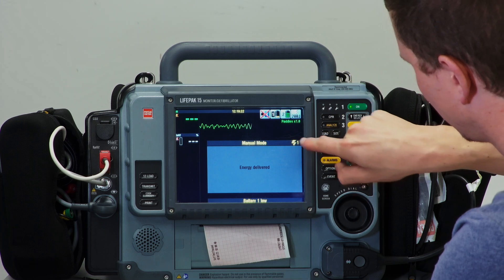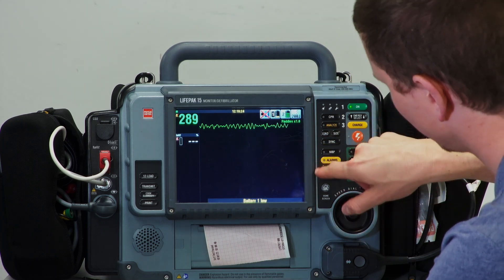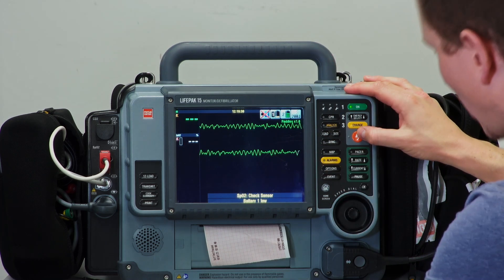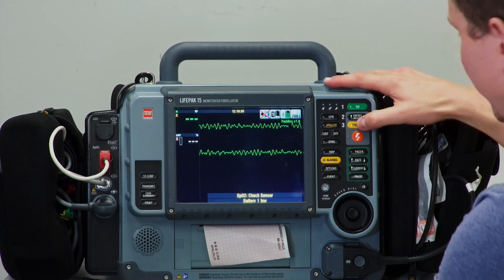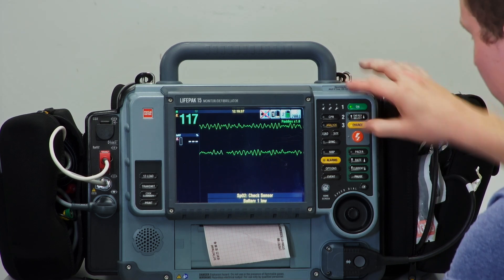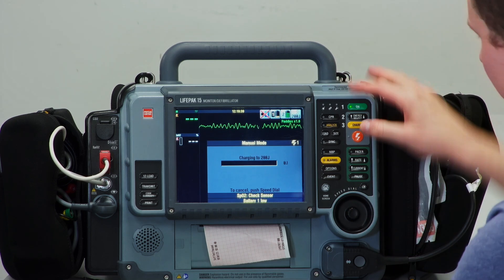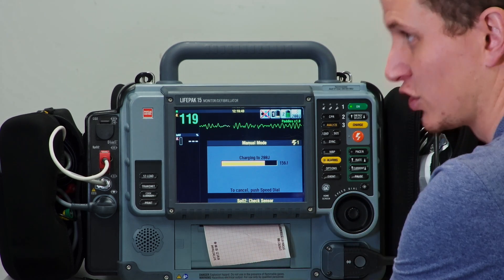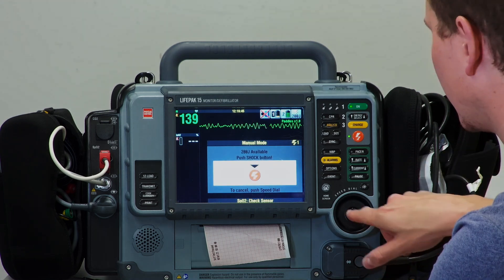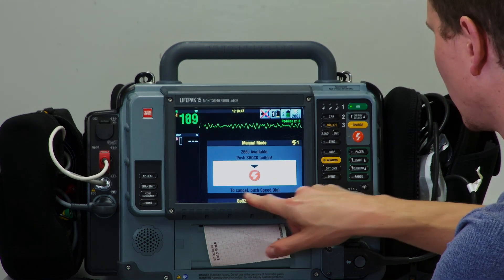It tells you here how many shocks have been given, which is really useful. Let's say you charge by accident but actually want to disarm. The machine will eventually disarm by itself if you leave it for long enough, or you can just hit the dial button. If I hit charge and I'm no longer needing to deliver the shock, you just hit the dial button. It says to cancel, push speed dial—you just hit the dial and it disarms, so no defibrillation was given.